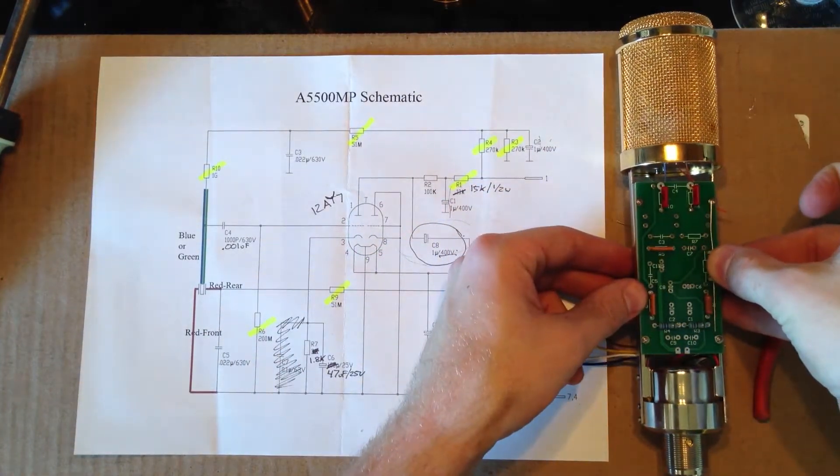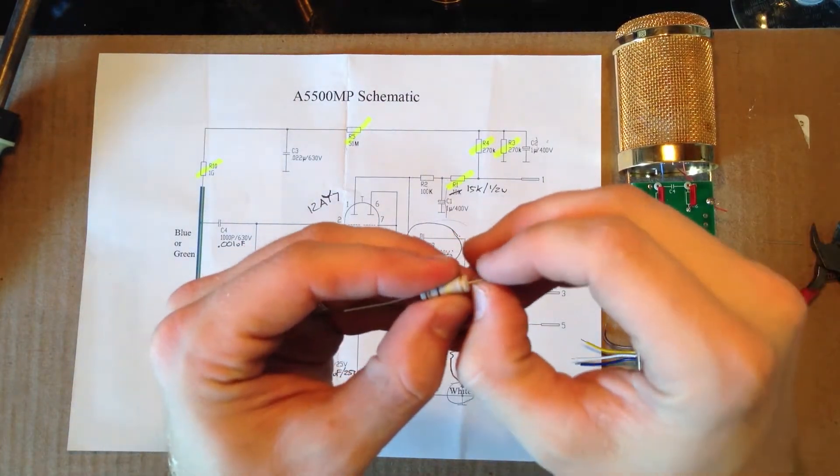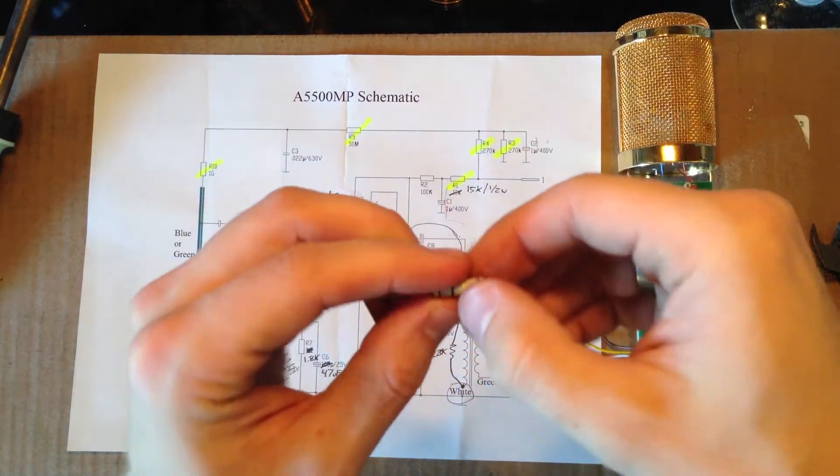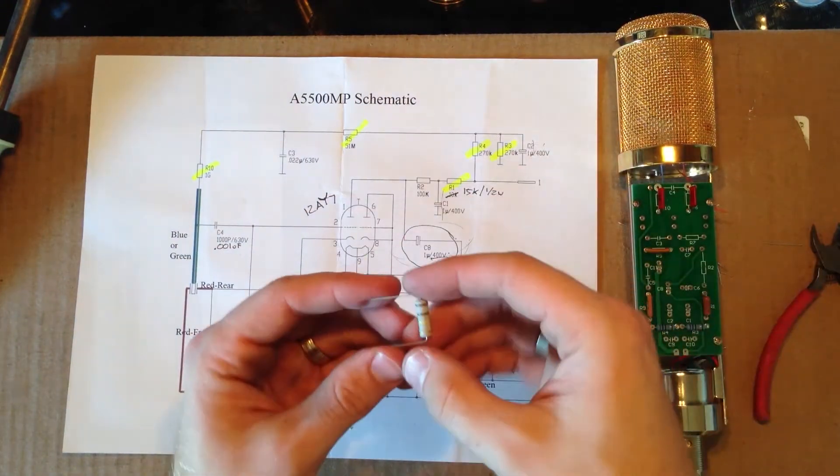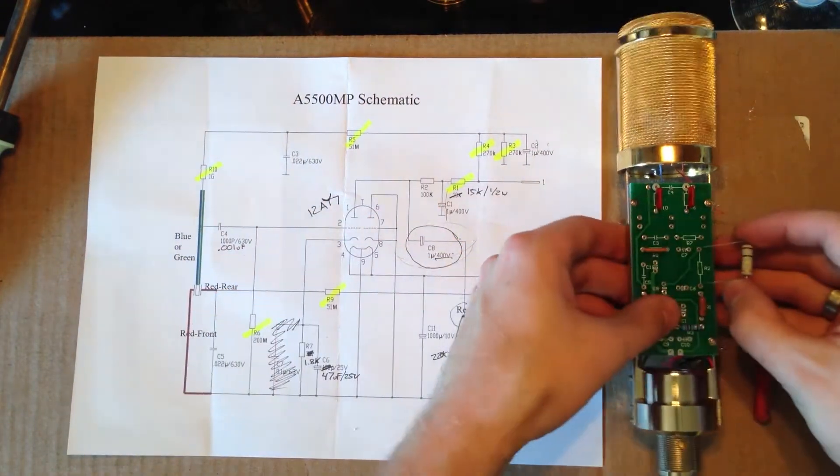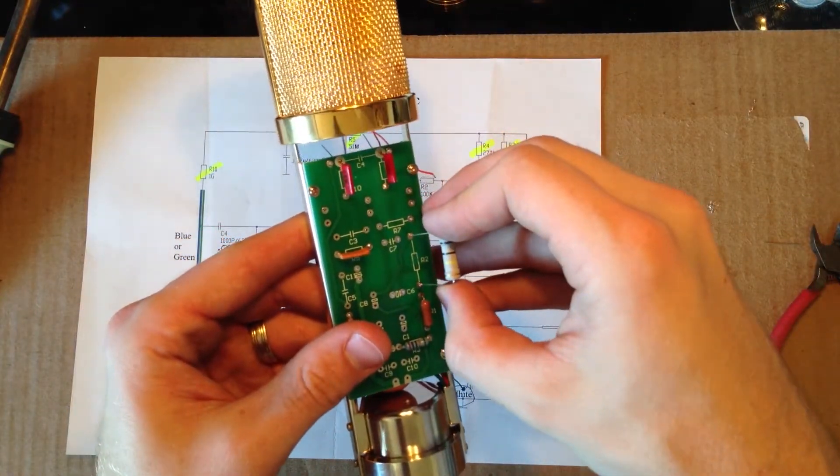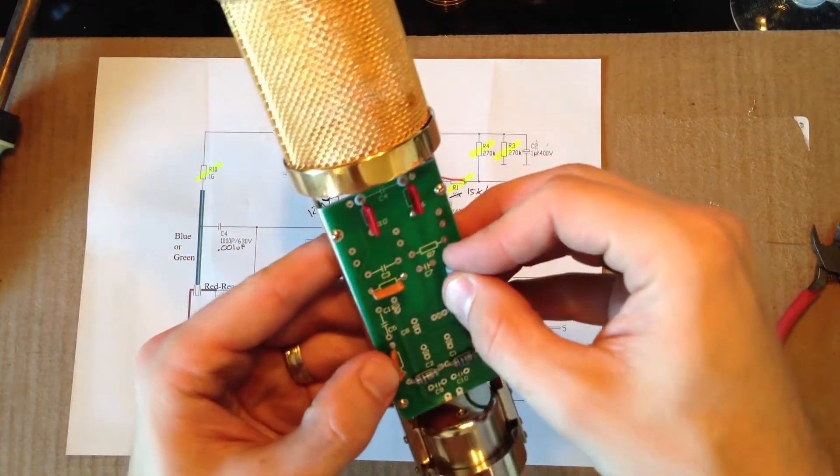Just want to go ahead and look in this thing and see where we want to bend these leads, which is about right there. Pretty much eyeballing it. Once we have those leads bent, we'll pick up the microphone and place that right into it.